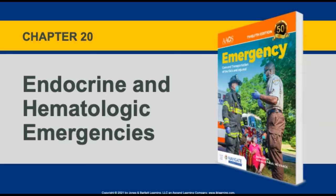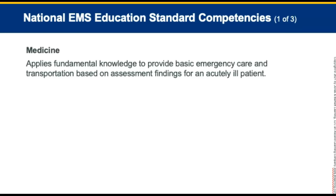Hello and welcome to Chapter 20, Endocrine and Hematologic Emergencies of the Emergency Care and Transportation of the Sick and Injured, 12th edition. After you complete this chapter and the related coursework, you will understand the significance and characteristics of diabetes, sickle cell disease, clotting disorders, and the complications associated with each. You will be able to demonstrate knowledge of the characteristics of type 1 and type 2 diabetes, list appropriate steps for assessment and pre-hospital treatment of diabetic emergencies, and discuss hematologic emergencies including sickle cell disease, hemophilia, thrombophilia, and deep vein thrombosis.